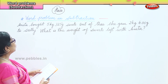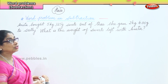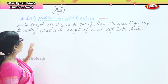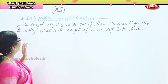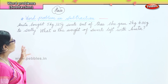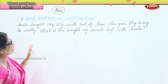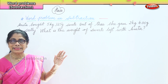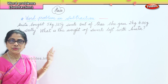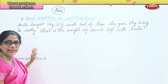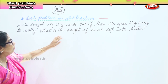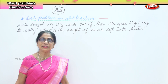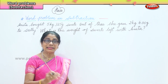So what will be the first statement? Total weight of sweets bought. Next will be weight of the sweets given to Sally. Finally, therefore, weight of sweets left with Anita.